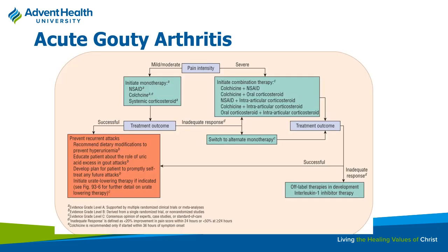Side effects of colchicine include neutropenia—since white cells are rapidly dividing and mitosis is affected—and neuromyopathies. Colchicine is primarily used as needed for acute attacks, not daily. For treatment intensity, mild-to-moderate gout can be managed with NSAIDs or colchicine. More severe cases may require combination therapy or corticosteroids. Then urate-lowering therapies will be discussed for prevention.